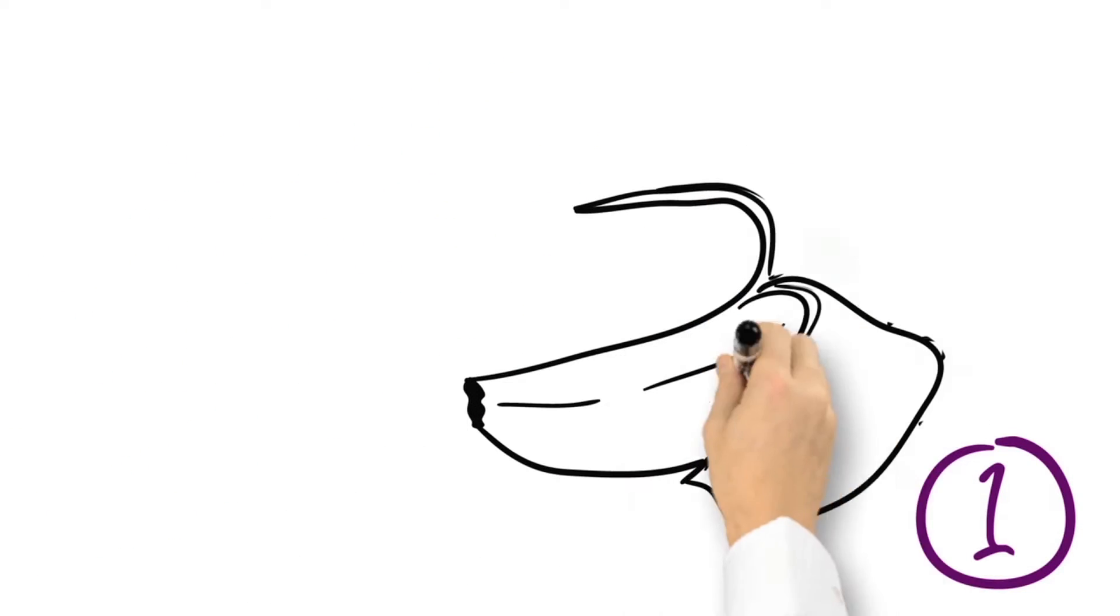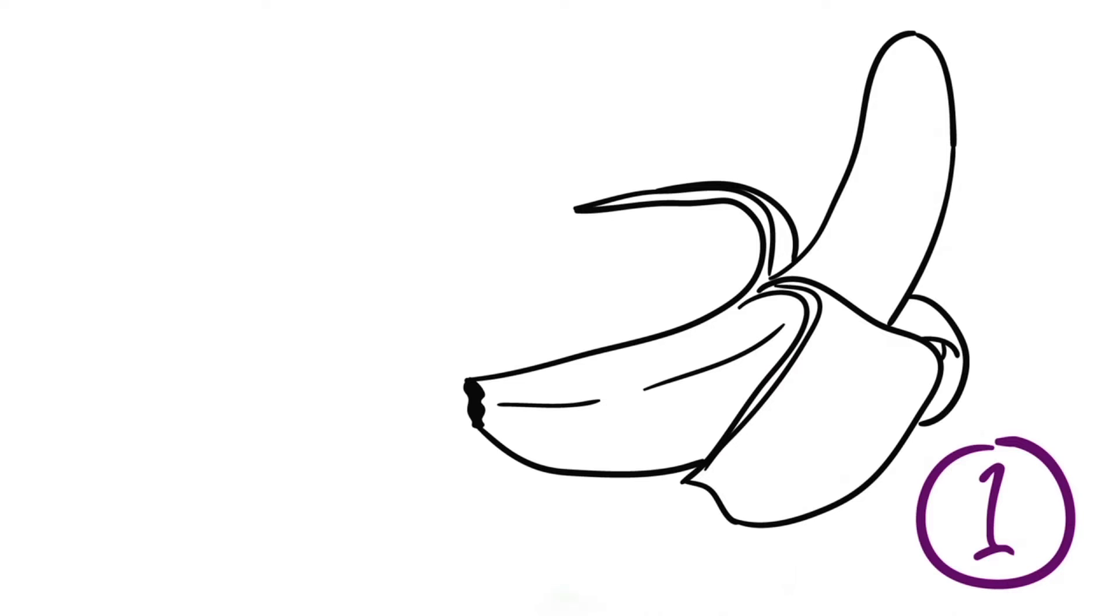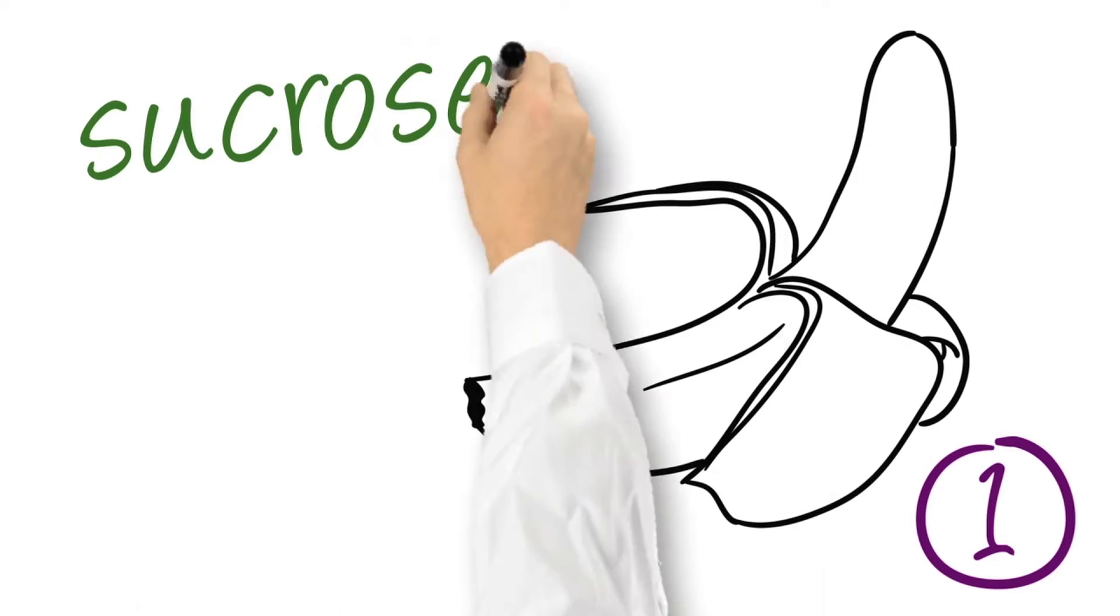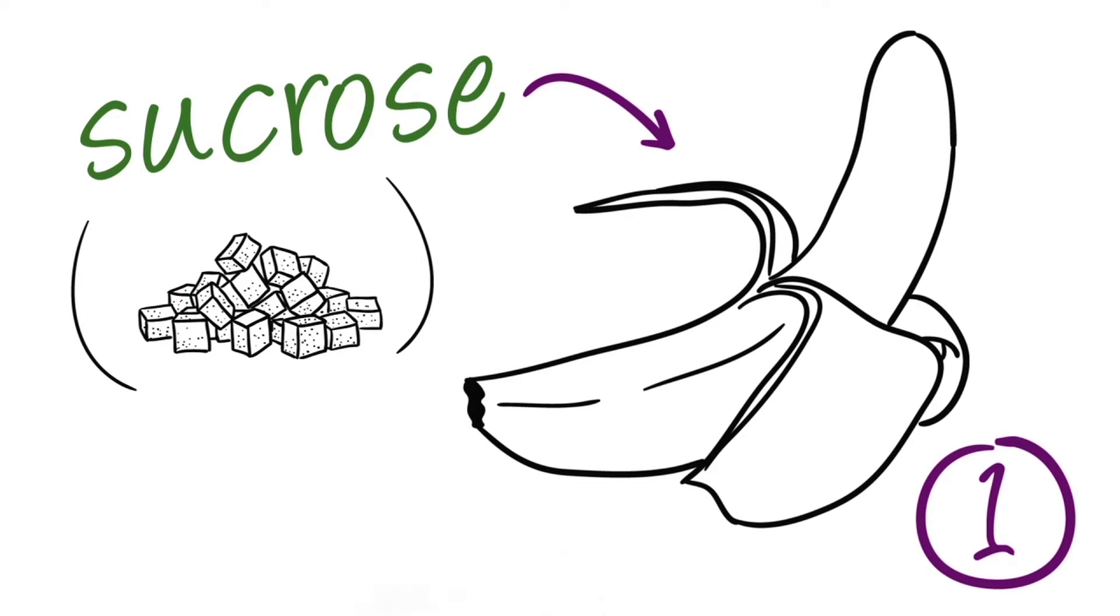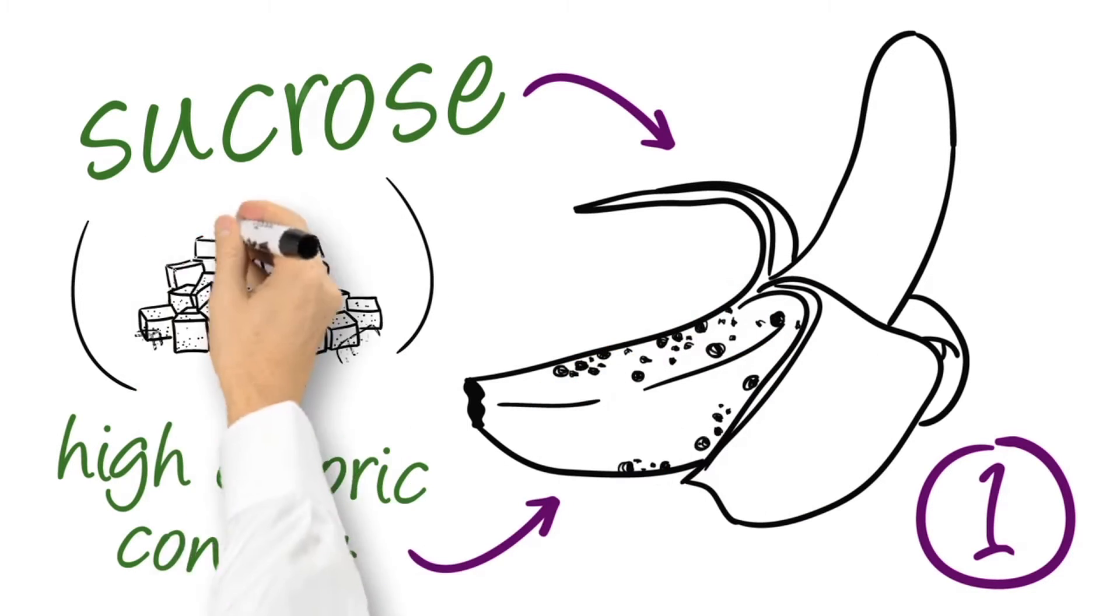First up, bananas. Yeah, bananas. Unbeknownst to most, they're rich in sucrose. You may know it as table sugar, which is known to go right to the belly. Their caloric content is really high, and the riper they are, the more sucrose they contain.